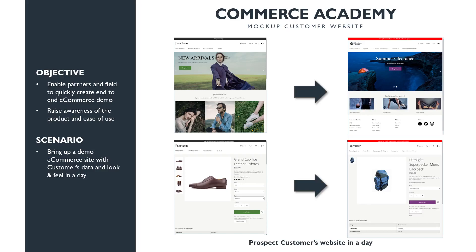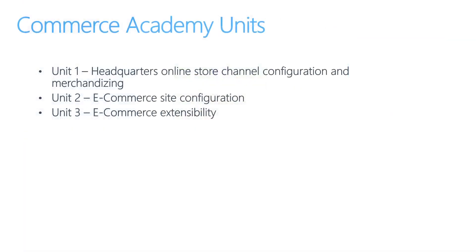So now that we understand the objectives, let's dive deep into the details of Commerce Academy structure. Commerce Academy content is divided into three units. Unit 1 is all about back office headquarters configurations and we will be setting up a new online store along with a bunch of back office configurations. In Unit 2, we will understand the site builder tool capabilities within Dynamics 365 Commerce and configure an eCommerce site and map it with the newly created online store from Unit 1. For Unit 3, my colleague will be joining me to present eCommerce extensibility and development aspects.